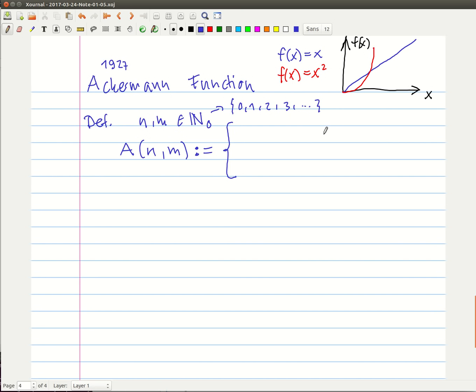So the first case is if N is equal to zero. If N is equal to zero, if we plug in a zero over here, this function will just return M plus one, which is pretty simple. So we just have to increment this argument M.